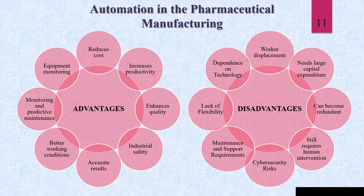The advantages of automation in pharmaceutical manufacturing include reducing cost, increased productivity, enhanced quality, industrial safety, accurate results, better working conditions, monitoring and predictive maintenance, and equipment monitoring. Disadvantages include dependency on technology, worker displacement, need for larger capital expenditure, cybersecurity risk, lack of flexibility, and maintenance and support requirements.